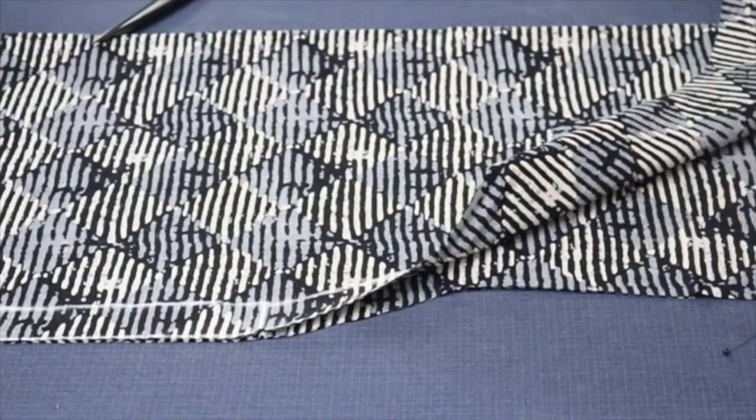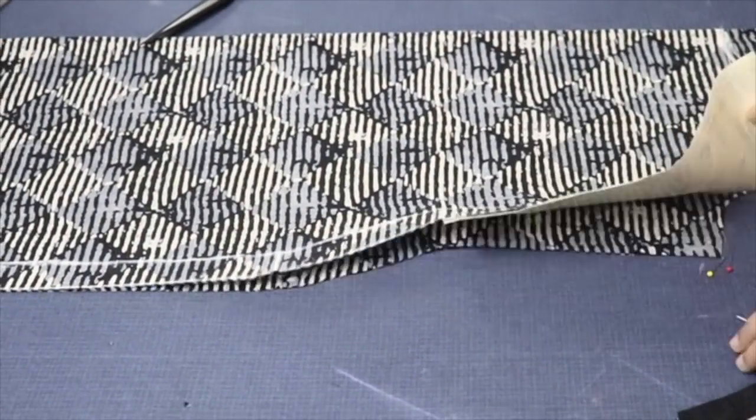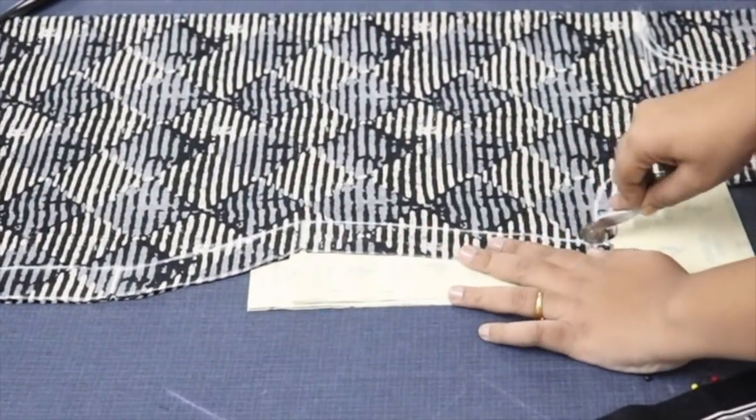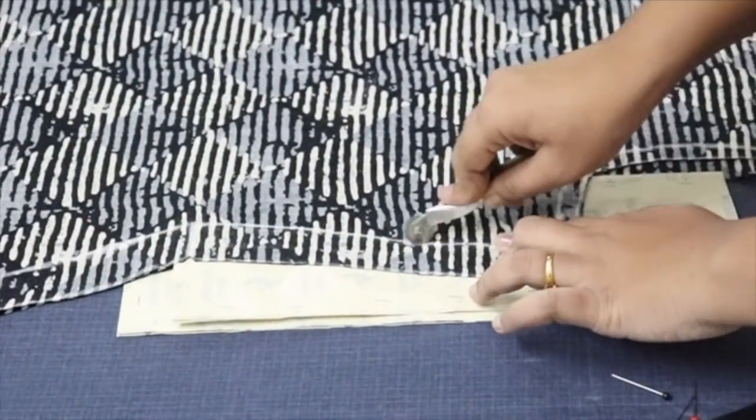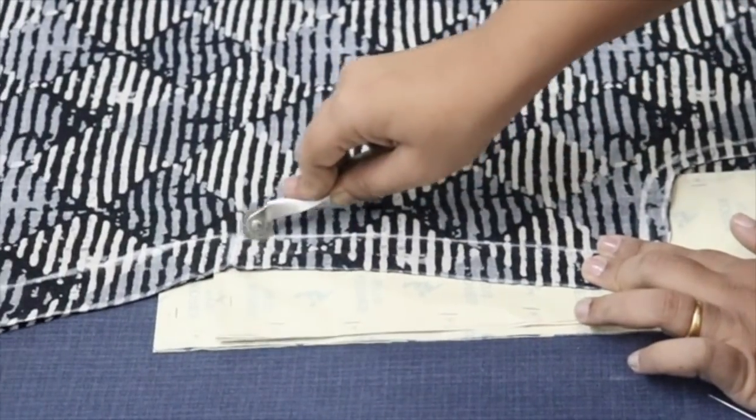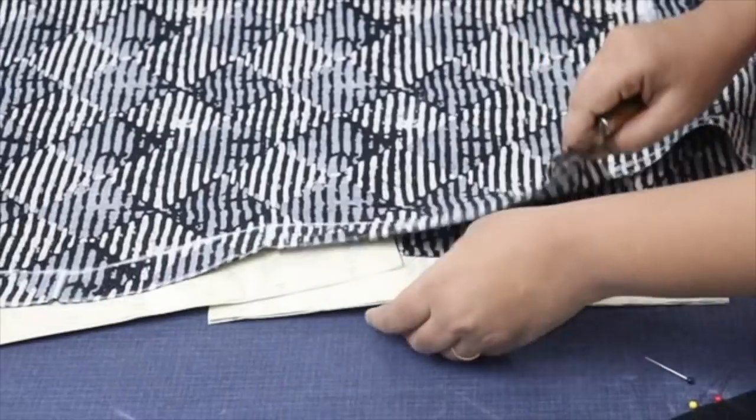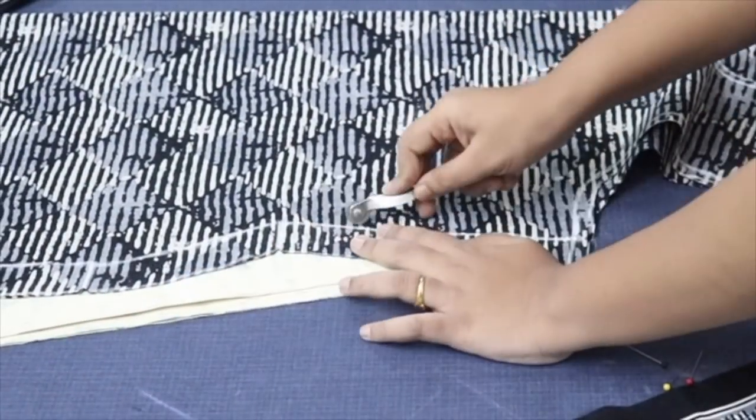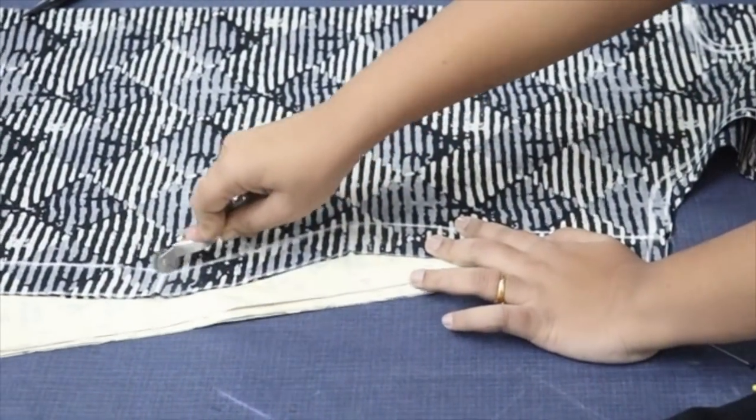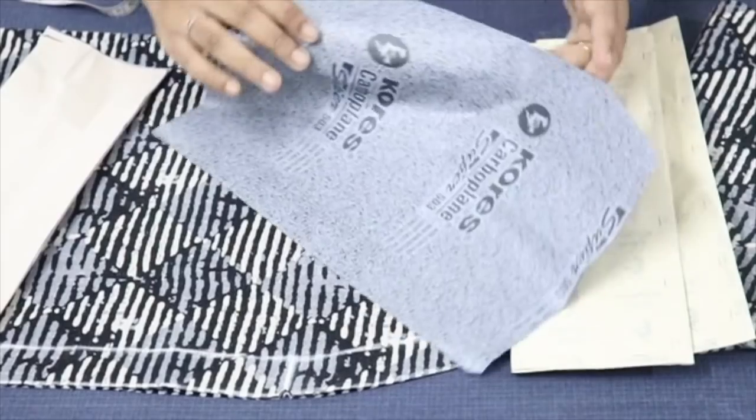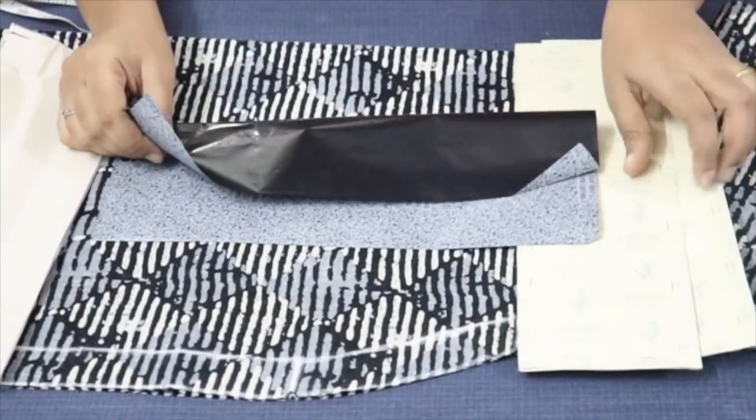Now you have to trace the side seam. Using carbon trace the side seam. So the marking is visible for me. I don't know it is visible in the camera or not. So now I will tell you how to make this carbon on both the side.